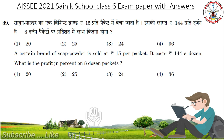A certain brand of soap powder is sold at 15 rupees per packet. It costs 144 a dozen. What is the profit in percent on 8 dozen packets? Answer is 25.